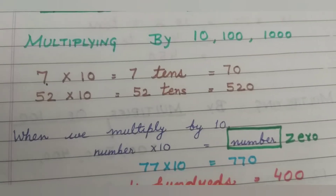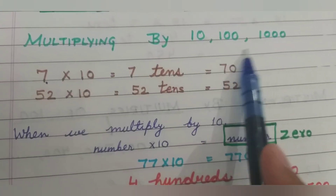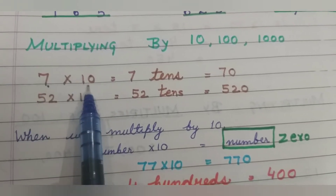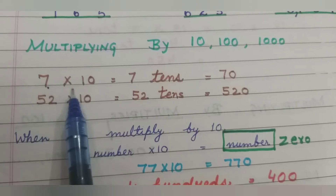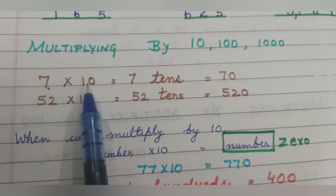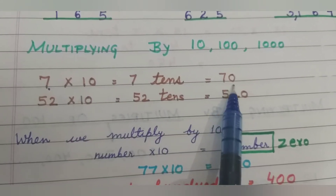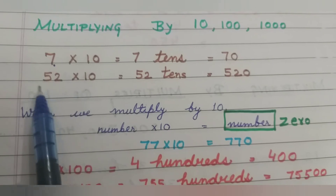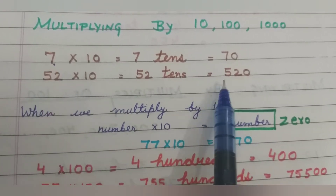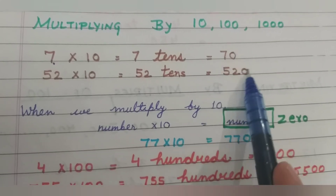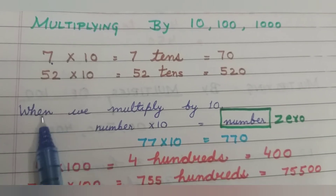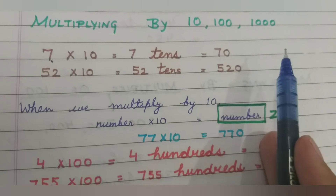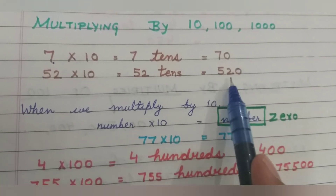Let's move on to the next one — that is multiplying by ten, hundred, and thousand. Let's start with ten. If you multiply any number by ten, let's see: seven multiplied by ten is seven tens, and seven tens means seventy. Fifty-two tens means five hundred twenty. What we observe is when we multiply any number by ten, we simply write the number and then put one zero on the right — we write one zero after the numeral.